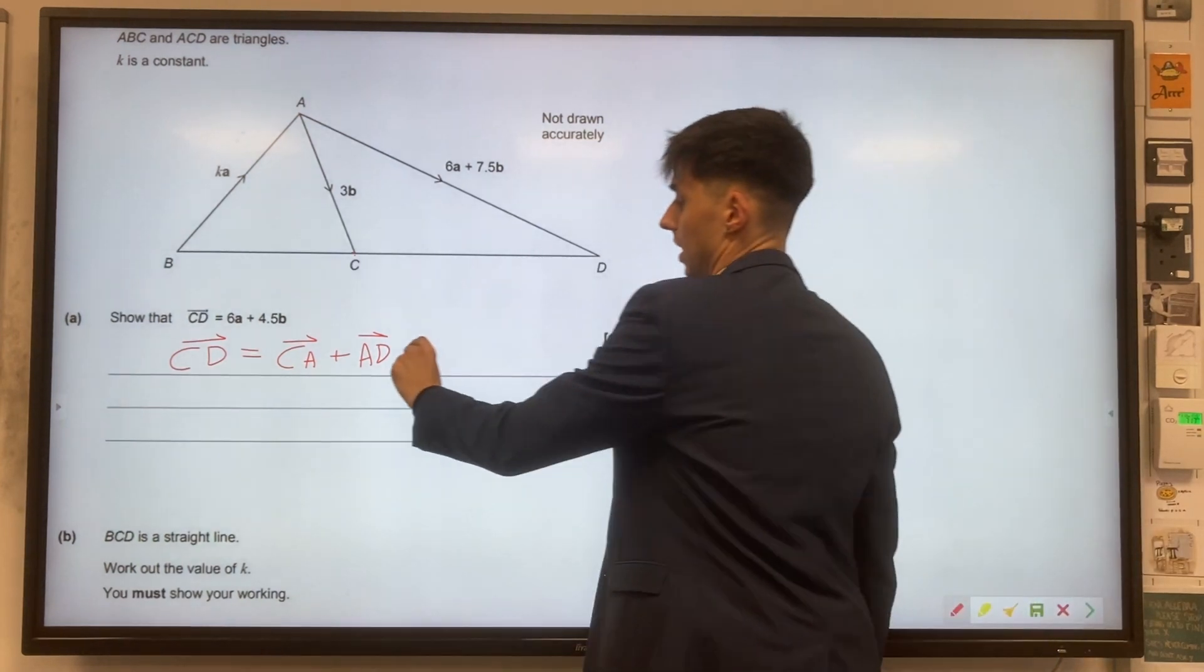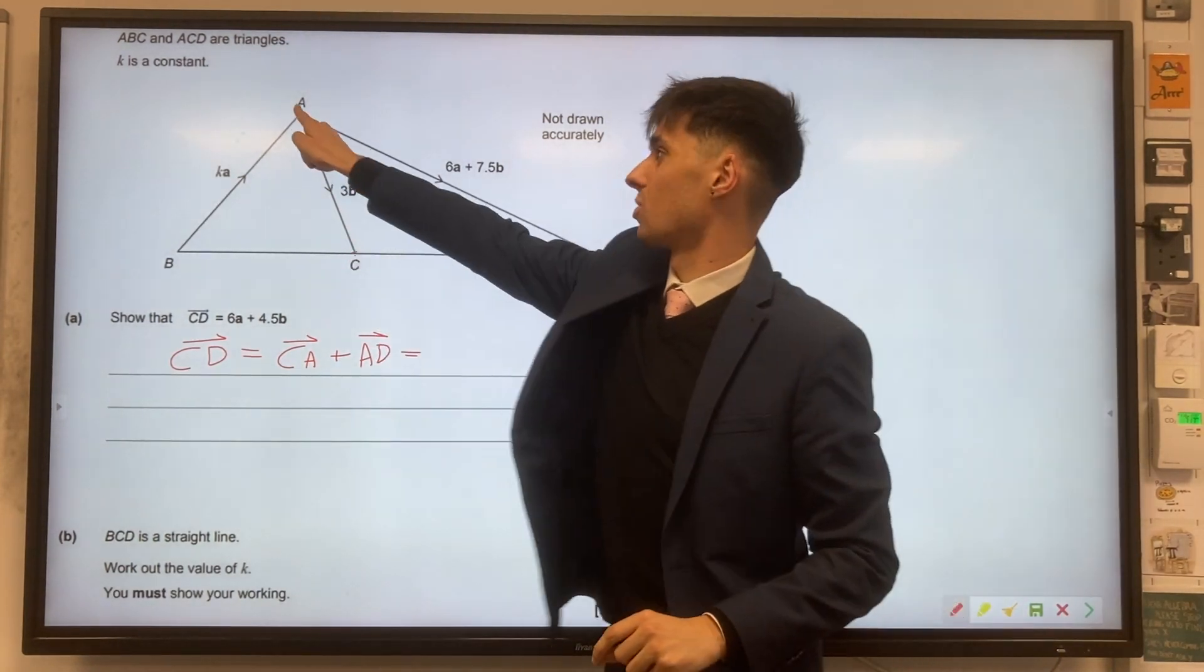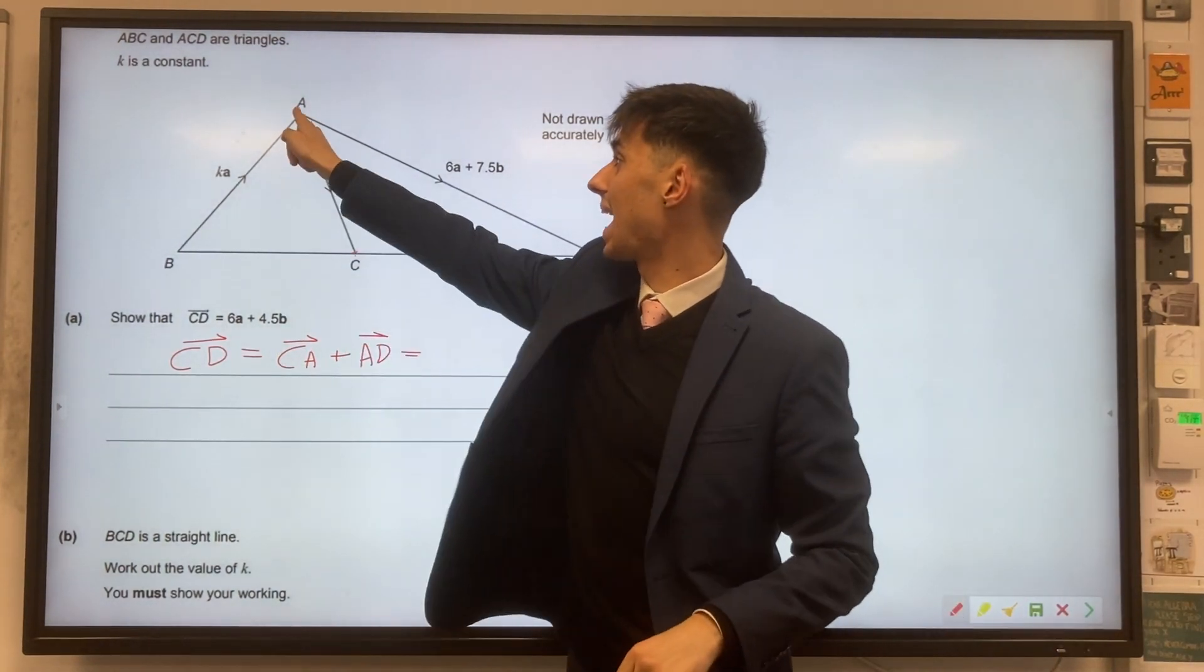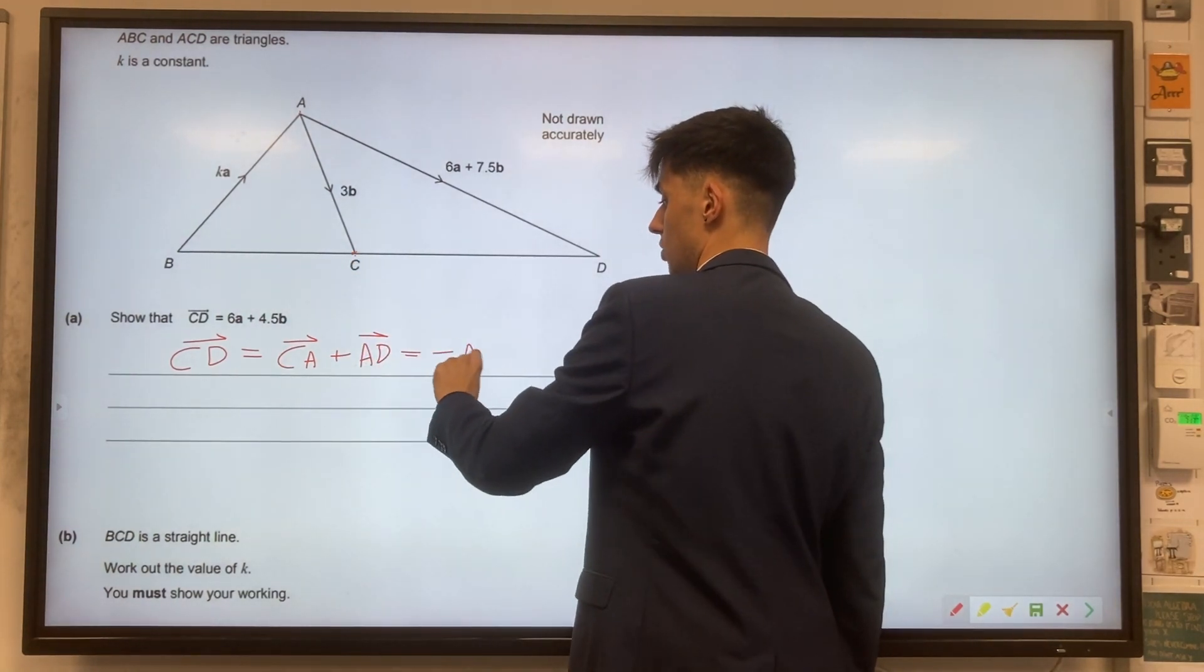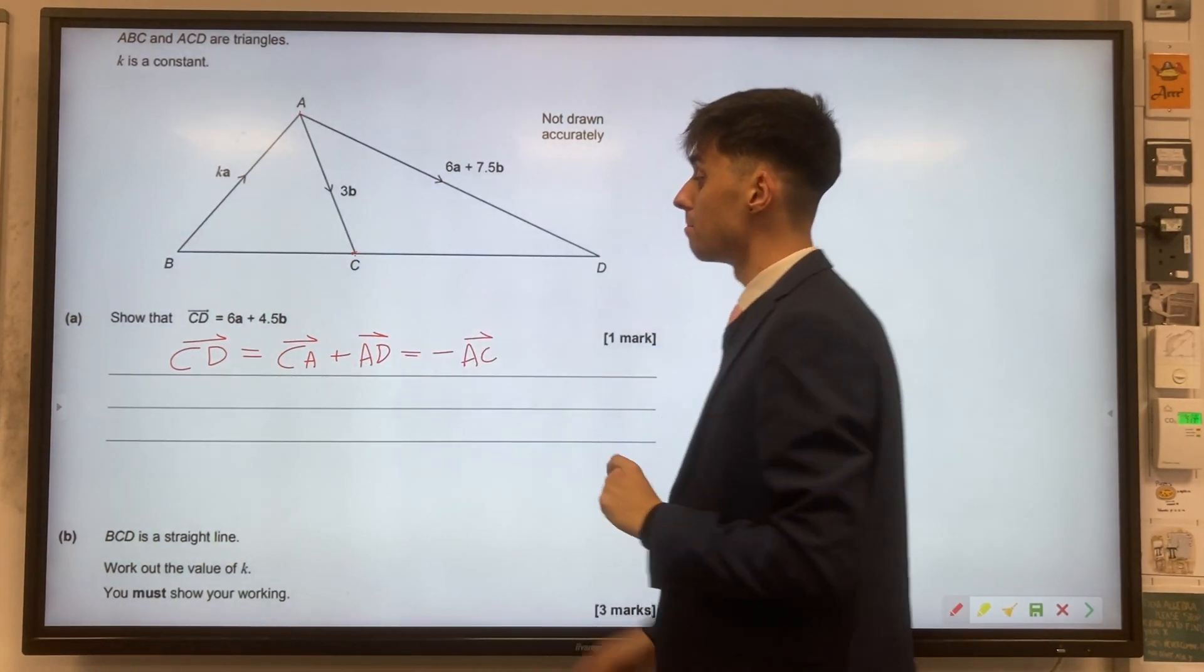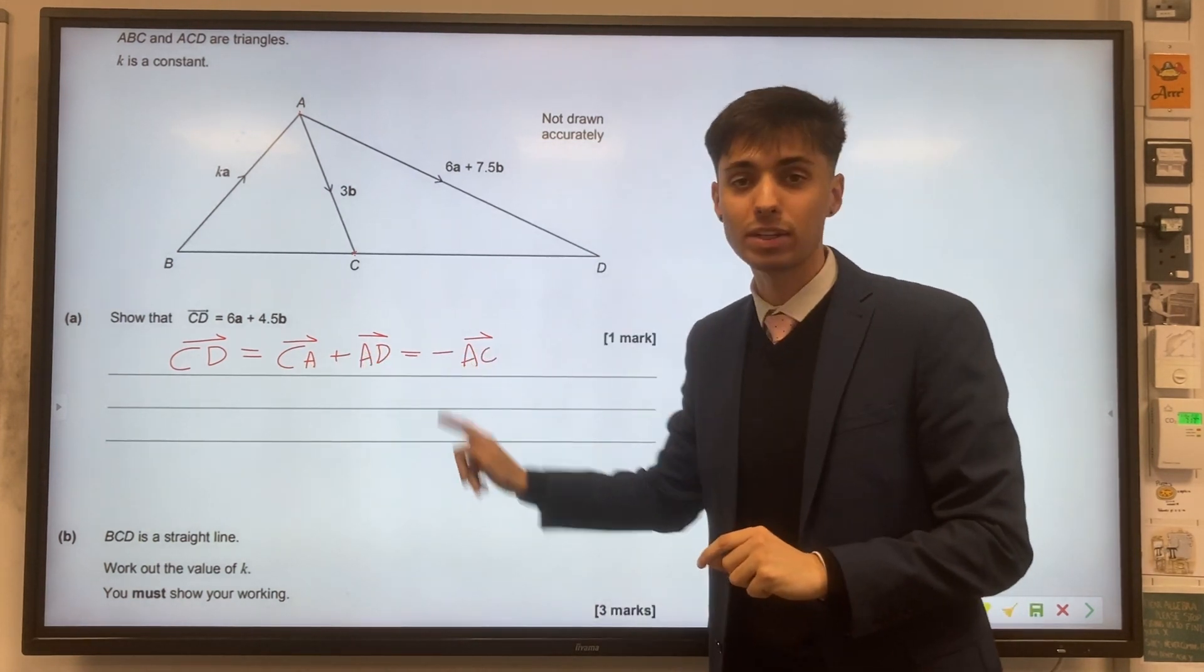Our next issue here is that CA is not given to us. We were given A to C, the other direction. So let's rewrite it in terms of what we've got. We've got minus A to C, travelling the other direction.